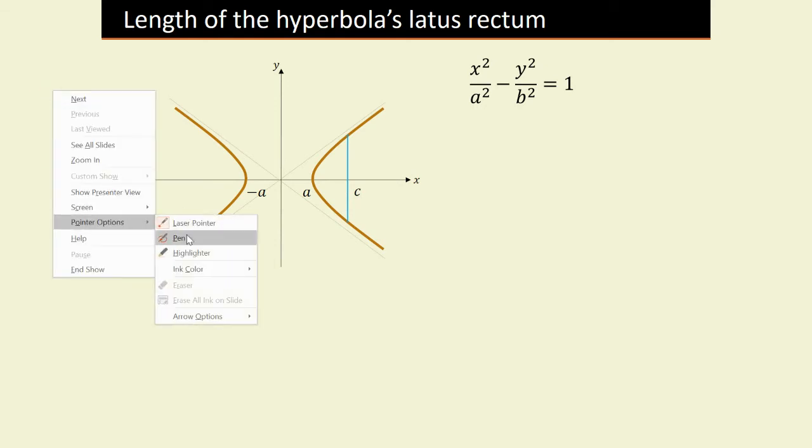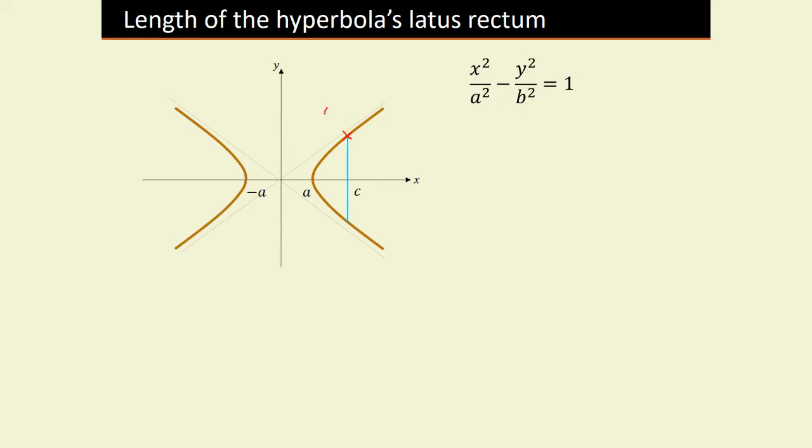Let's call the top point A with coordinates (C, y). Its x-coordinate is C because it's on the line through the focus at position C on the x-axis, but we don't know its y-coordinate. The bottom point B also has x-coordinate C but a different y-coordinate y'. Since the points are symmetric, y' equals the negative of the y-value at A.